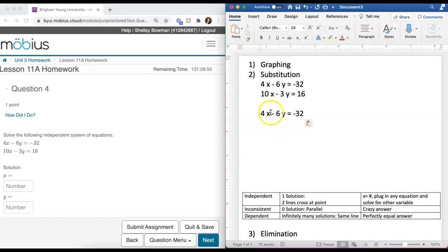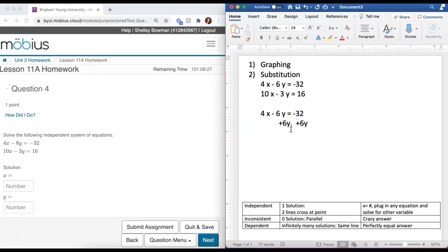The first thing I want to do is make sure x is all by itself on the left-hand side. To get rid of the 6y, we're going to add 6y here, and to keep it balanced, we have to also add 6y here. I'm left with 4x equals 6y minus 32.